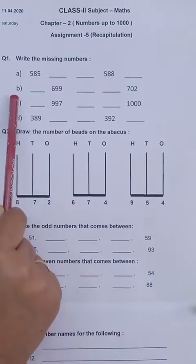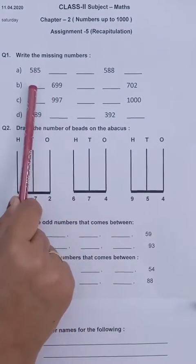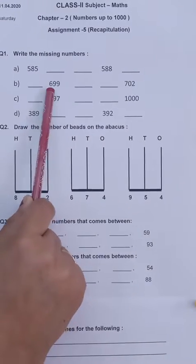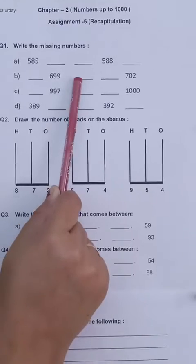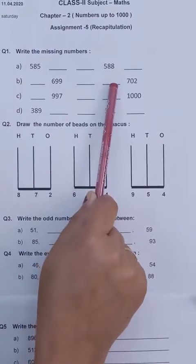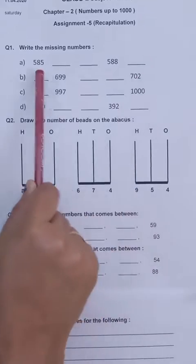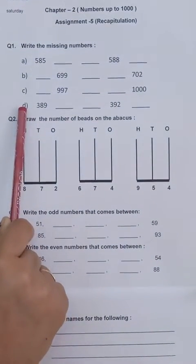In the same way B part, what comes before 699? That is 698. What comes after 699? That is 700, 701 and 702 is already given. In the same way you have to do the last 2 parts.